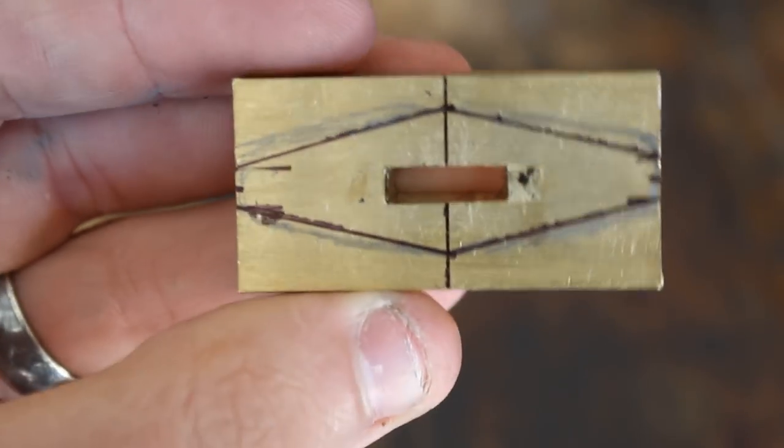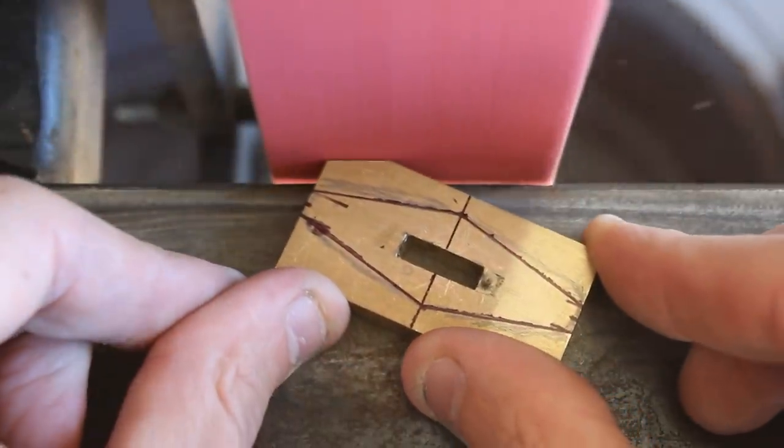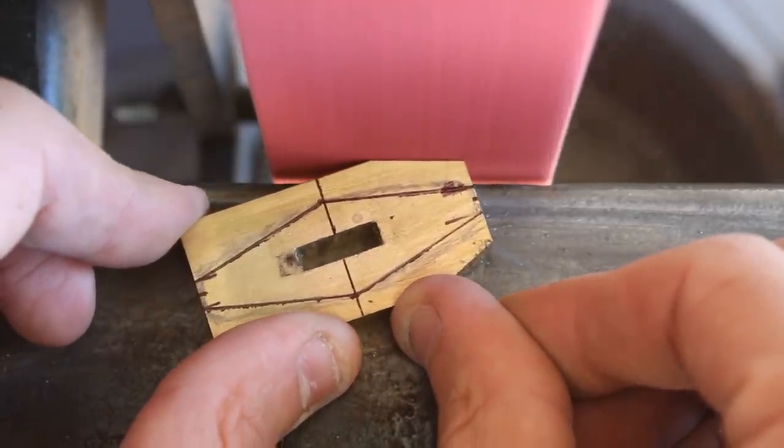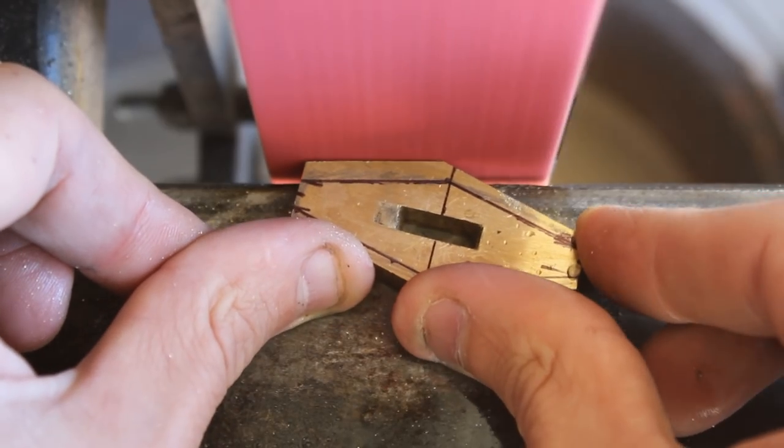Now I'm going to shrink the guard down closer to the size I need it to be. This is because once I do the glue up I don't want to have to do a ton of grinding on the brass which could cause it to overheat and mess the epoxy up.